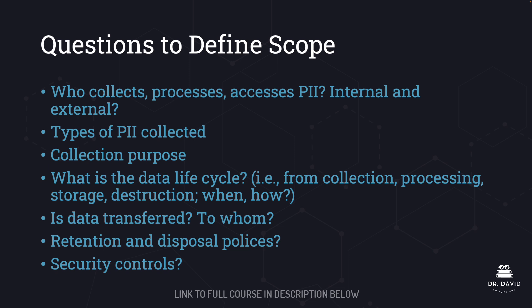A security control is a countermeasure that we implement to mitigate cybersecurity threats and risk. For example, to prevent unauthorized access, modification, deletion, or exfiltration of data, our organization's network may use multiple firewalls. The objective of a firewall is to allow only authorized data or traffic to enter and exit the organization's network, helping to keep out malicious actors. A firewall is an example of a security control. When we get to the protect section of the governance lifecycle, we will talk more about security and privacy controls.